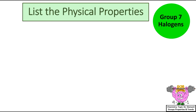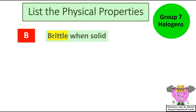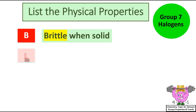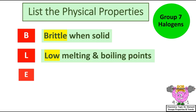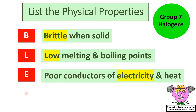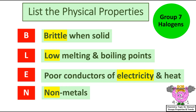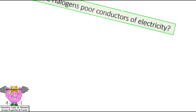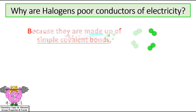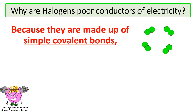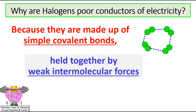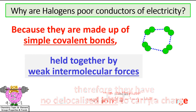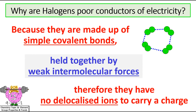List the physical properties of Group 7 halogens. I use the acronym BLEN to remember the properties: B for brittle when solid, L for low melting and boiling points, E for electricity — halogens are poor conductors of electricity and heat — and N for non-metals. Why are halogens poor conductors of electricity? Because they're made up of simple covalent bonds held together by weak intermolecular forces, so they have no delocalised ions to carry a charge.